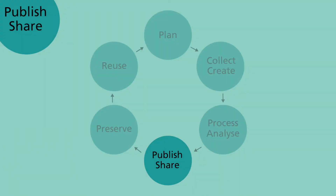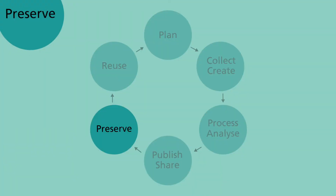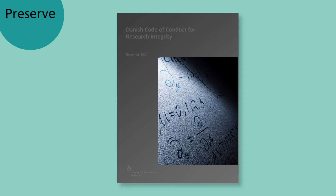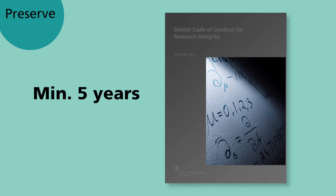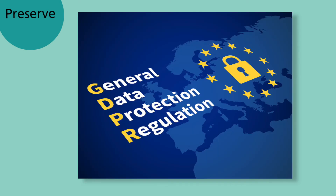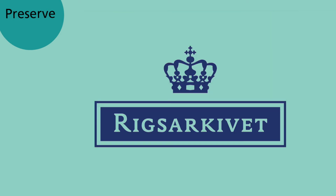The next step of the research data lifecycle is to prepare your data and all relevant documentation for long-term preservation. The Danish Code of Conduct for Research Integrity requires research data to be retained for a minimum of five years from the date of publication. Be aware that other and stricter requirements may apply to your project. Also note that personal or confidential data, as defined by European and Danish legislation, must be properly disposed of, anonymised or migrated to the Danish National Archives for preservation after the project ends.